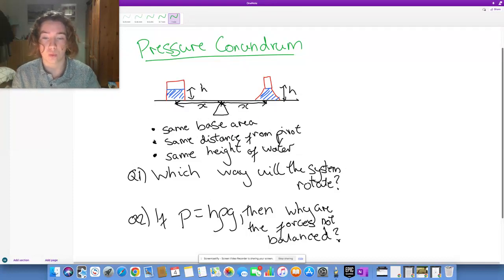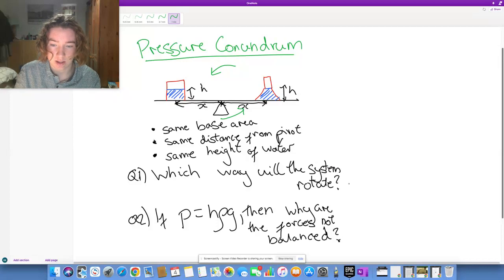which way will the system rotate? Now, this should be fairly easy. So we'd say that the system, this side on the left, has more water because it's like a cylinder rather than a cone. Therefore, we'd say it rotates like this, right? So that bit's easy.